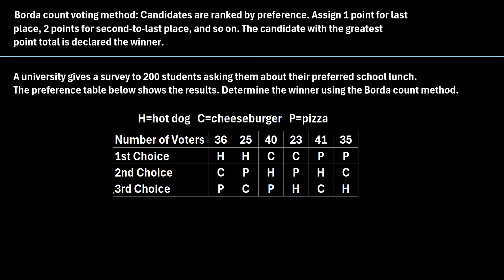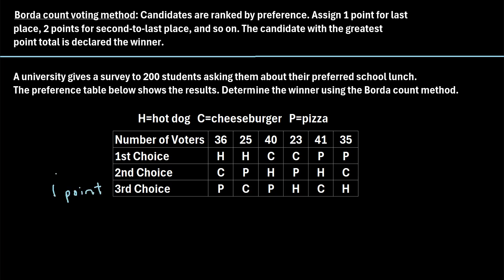Using the Borda count method, the third choice represents the last place choice, so last place gets one point. The second choice gets two points, and a first place choice gets three points. We assign one point to last place and increase the number of points each time until we get to the first place choice.